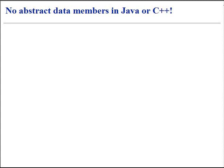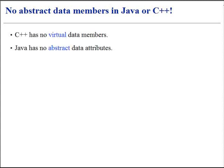In popular programming languages, abstract attributes are not allowed. Abstract attributes are not part of either Java, nor C++ programming language.